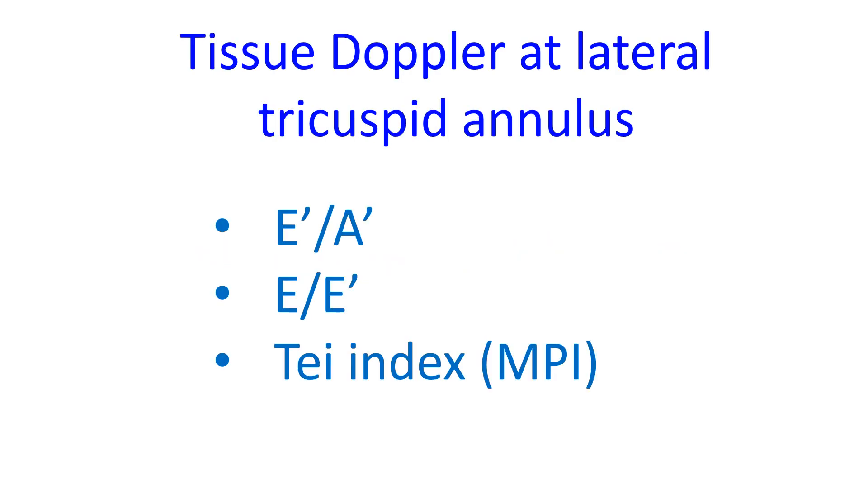As in the case of the mitral valve, assessment of tricuspid inflow velocities is a simple way to assess right ventricular diastolic function. E by A ratio and deceleration time of the E wave can be recorded using pulsed Doppler cursor at the tip of tricuspid valve leaflets.